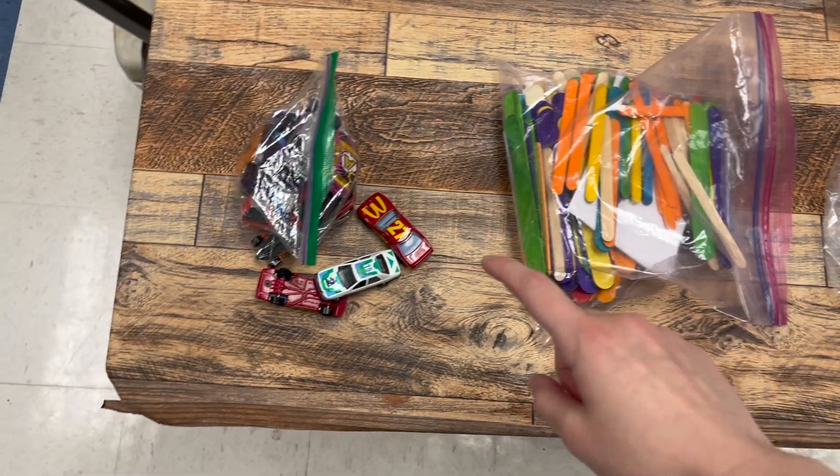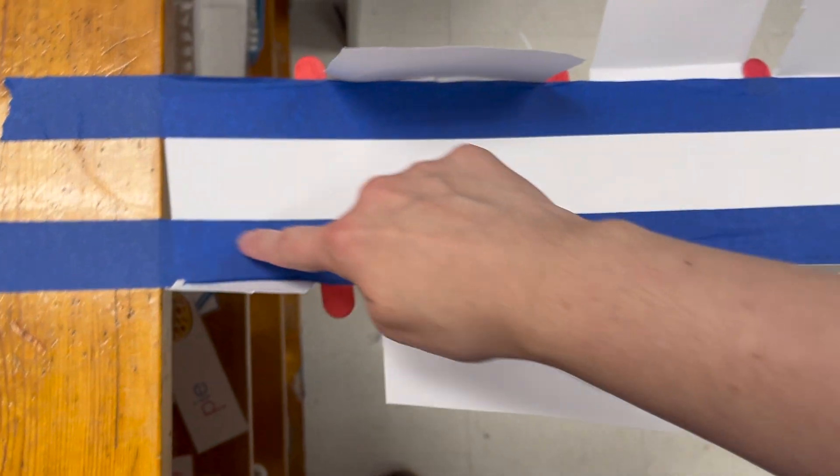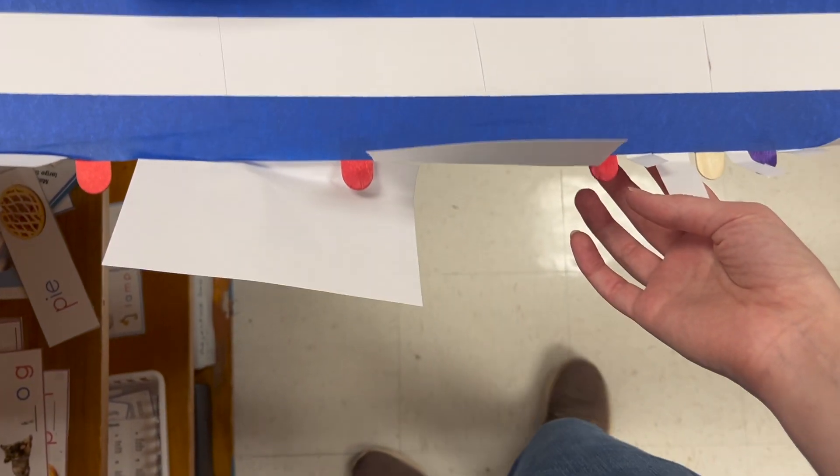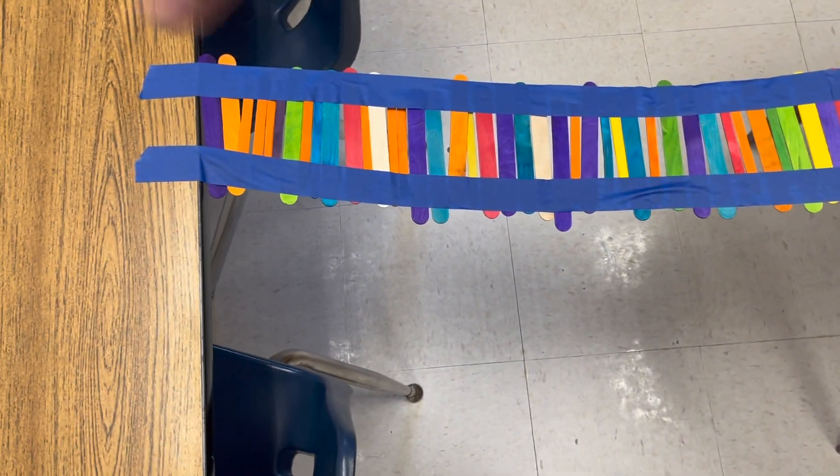So we did an activity where we had the cars and then popsicle sticks and index cards to make bridges. And you put blue tape against two surfaces. And then you make a bridge. Now what I thought the kids would do and what they did at first was just lay everything on top. But then they noticed the tape was sticky. So I thought that was incredible that they figured that out. And the little car goes on top and goes zoom. Here are the bridges.